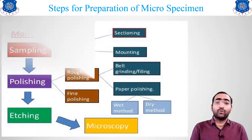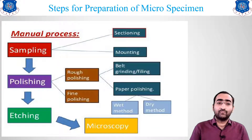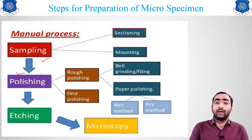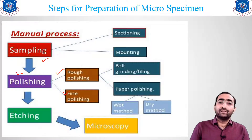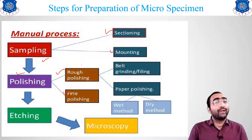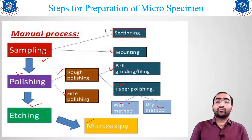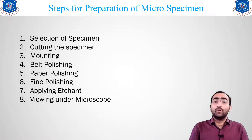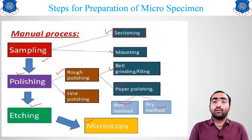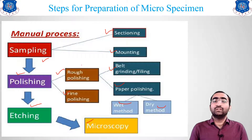Let us look at the overall steps: first, sampling — take the sample, then go for rough or fine polishing. Rough polishing is done with belt and paper, whereas paper polishing uses wet and dry methods. After polishing, we go for etching and microscopy. So mainly there are four broad stages: sampling, polishing, etching, and microscopy.